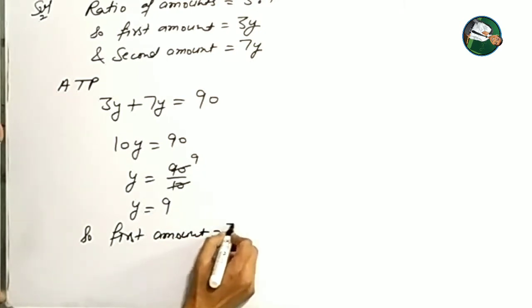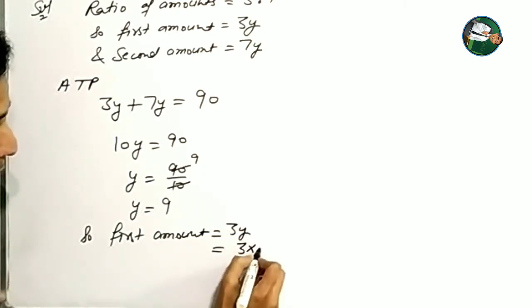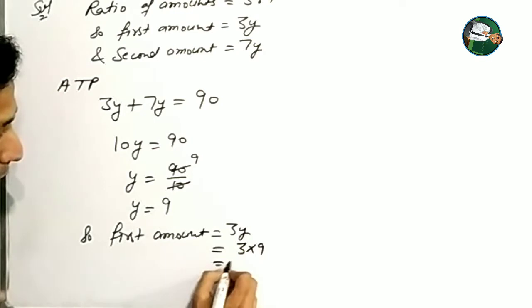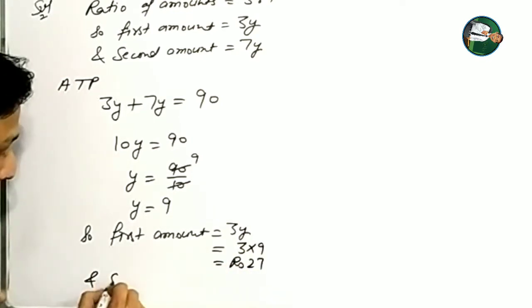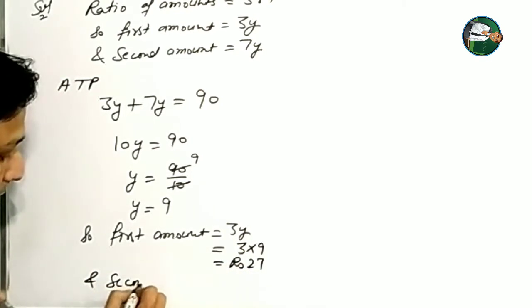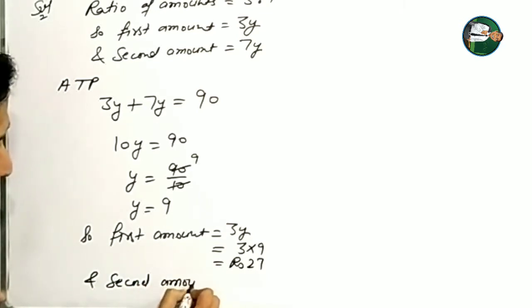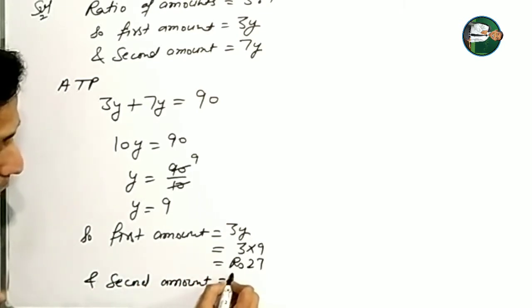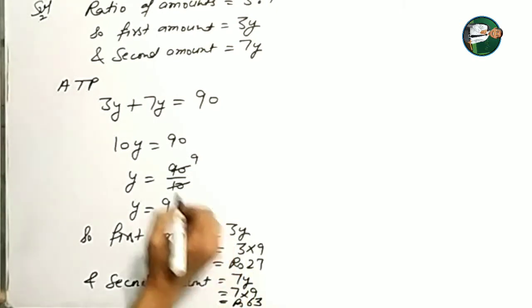Now putting the value of y into the expressions: the first amount is equal to 3y, meaning 3 into 9, which is Rs. 27. And the second amount is equal to 7y, meaning 7 into 9, which is Rs. 63.